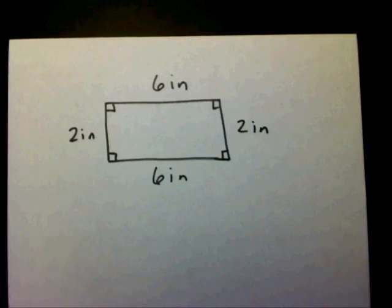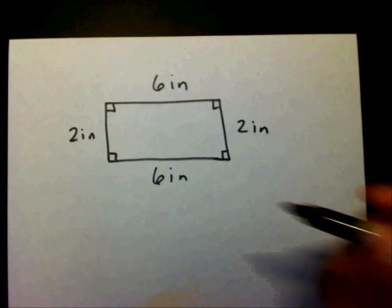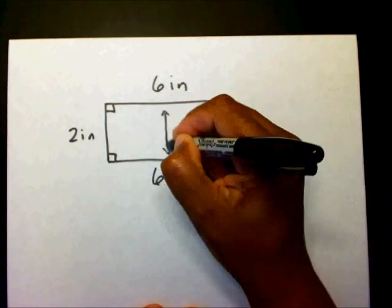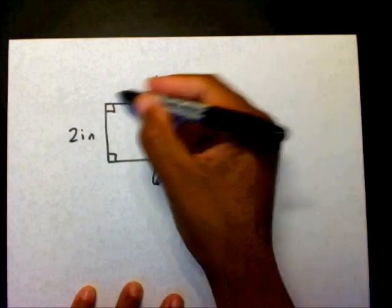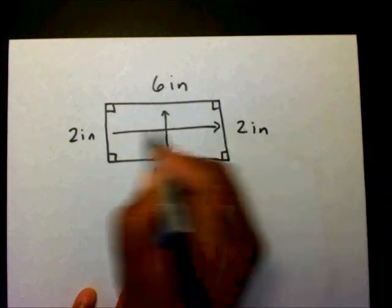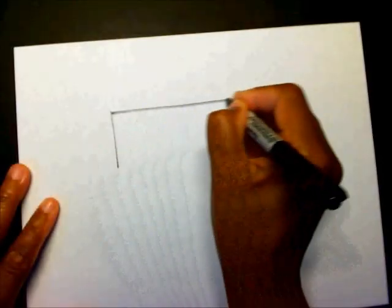Well, we know this is a rectangle because the opposite sides are the same length. This side is 6 and this side is 6, and this side is 2 and this side is 2. Let's use that same rectangle.